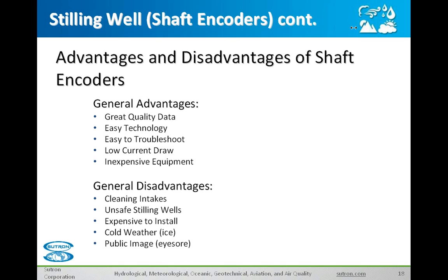Some disadvantages of using a shaft encoder or stilling well: those intakes not only take in water, but in certain events they may also take in silt and debris, which can make your data a little more erroneous. You do have to maintain that, which can include climbing in and cleaning them out, which can also be unsafe. Installing a stilling well can be pricey and expensive, and sometimes difficult with permits depending on where you live. Regarding icy situations, the problem is your float can rest on top of the ice, and as water moves underneath the ice surface, you're not going to really measure the change there.